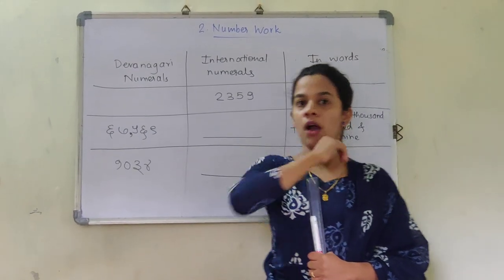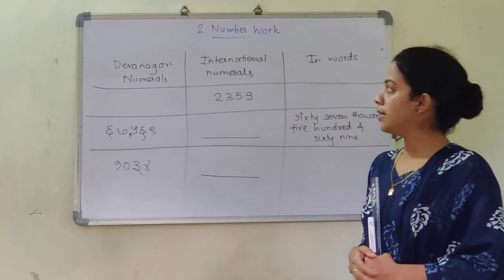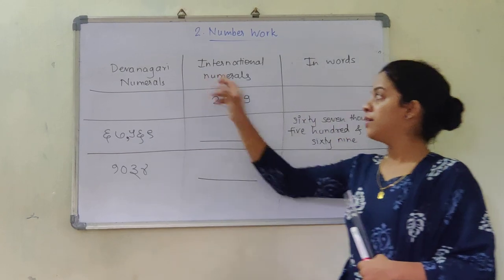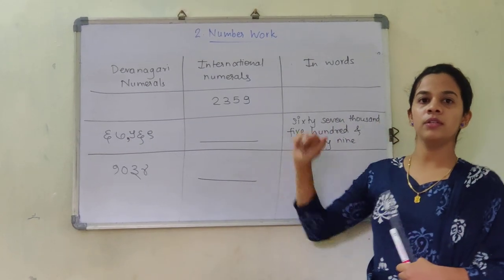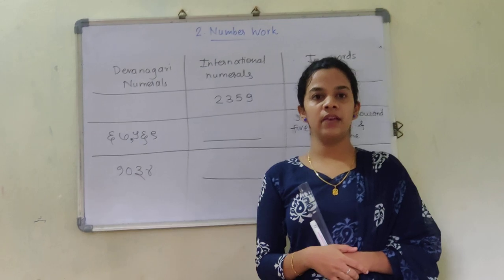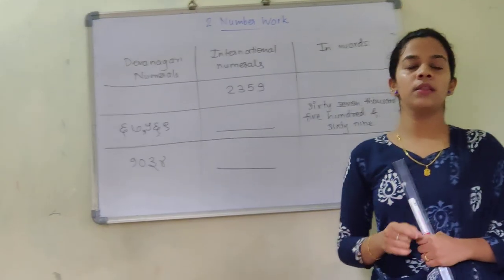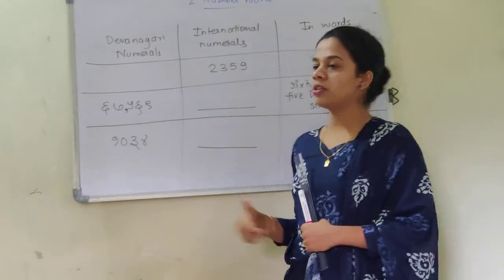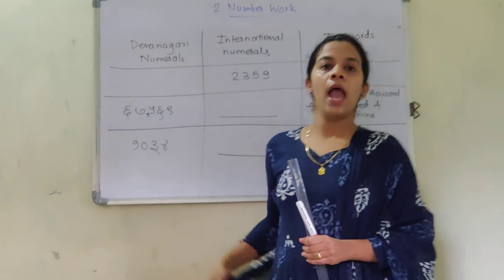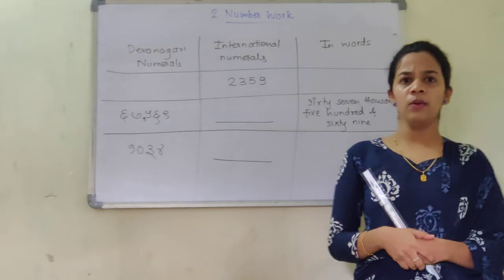Now we will look at the table near number 4. You can see Dev Nagari numerals, international numerals, and numbers written in words. Dev Nagari means in Marathi — how you are going to write the number in Marathi. International numbers means the numbers which we use daily, and the next type is writing them in words.